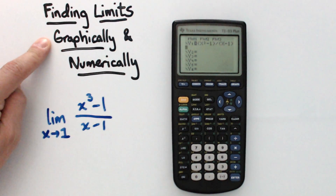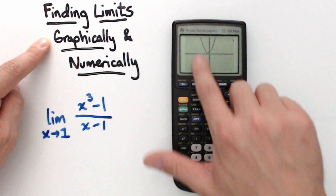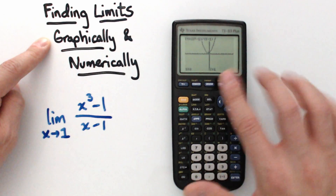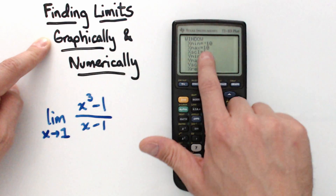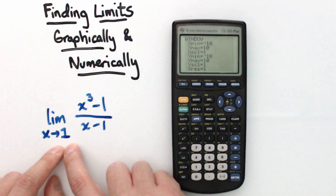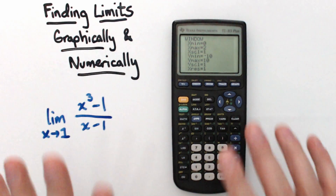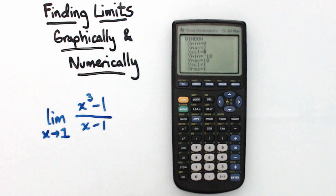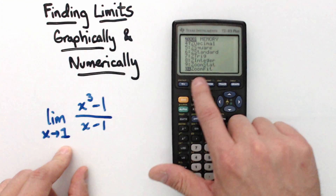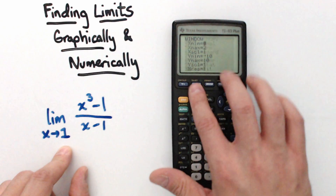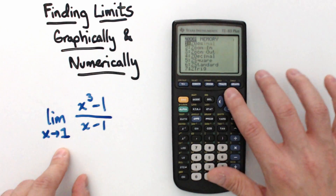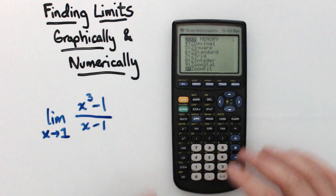The first thing I'm going to do is approach this graphically. If you graph this as-is, you get a screen where there's not a lot you can see around x = 1. So I'm going to zoom in by hitting Window and changing x-min to 0 and x-max to 2, since that puts 1 in the middle. You don't have to do this, but it helps. Then I'll hit Zoom and select Zoom Fit, which automatically adjusts the y-min and y-max to fit the graph nicely on screen.